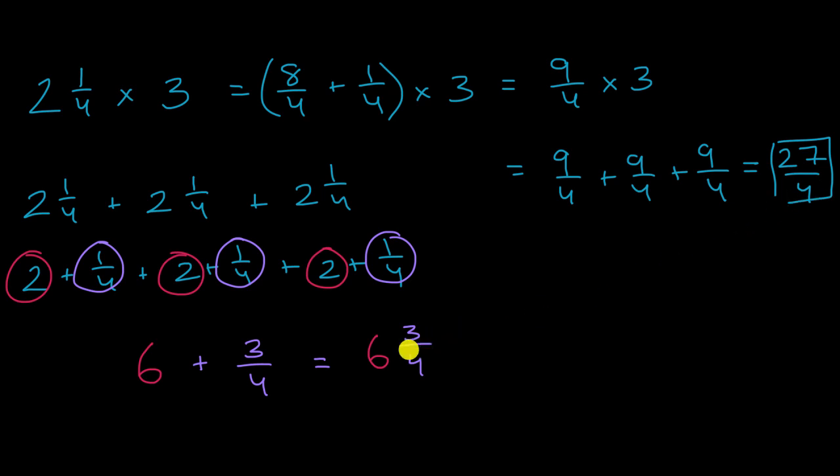Now you might be saying these look like they are different, but you could check this. Six is equal to how many-fourths? So six is equal to 24-fourths, 24-fourths plus three-fourths which is exactly equal to 27-fourths and we are done.